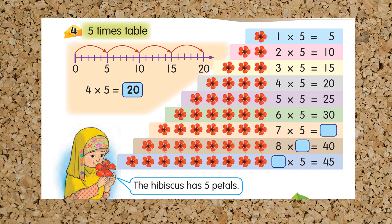For 5 times table, we have to add 5. 1 times 5 is 5, 2 times 5 is 10, 3 times 5 is 15, 4 times 5 is 20, 5 times 5 is 25, 6 times 5 is 30, 7 times 5 is 35. 8 multiplied by 5 equals 40.